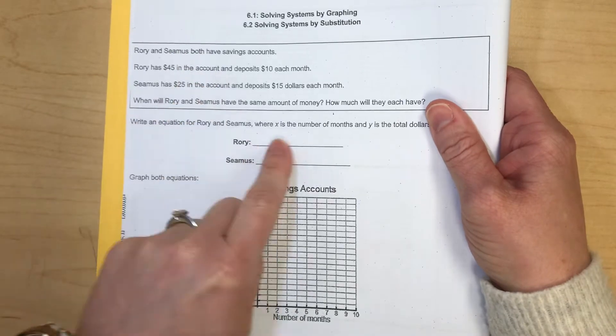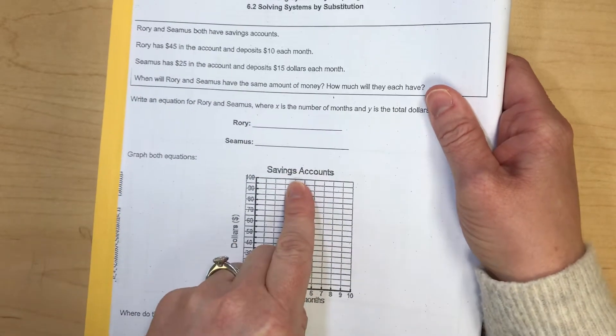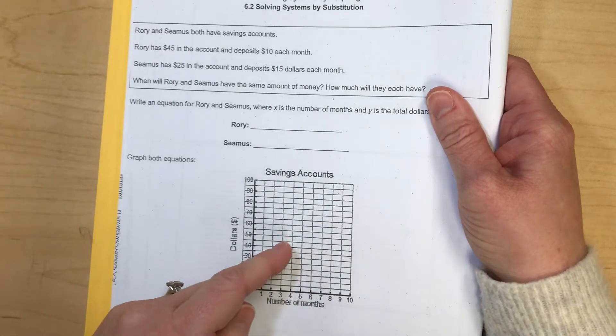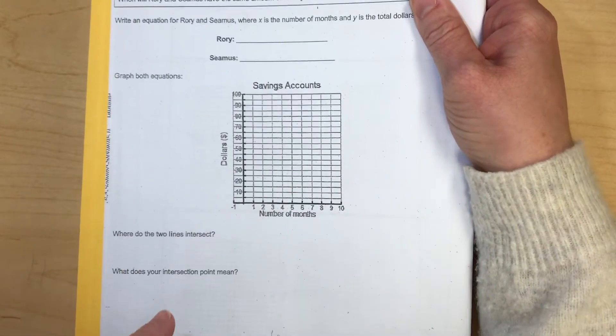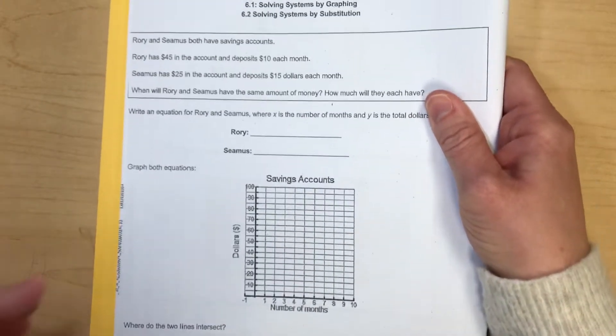I'm going to read this scenario up top, create my two equations, graph them, and then find the point of intersection, which will be the solution to my system. All right, so here we go.